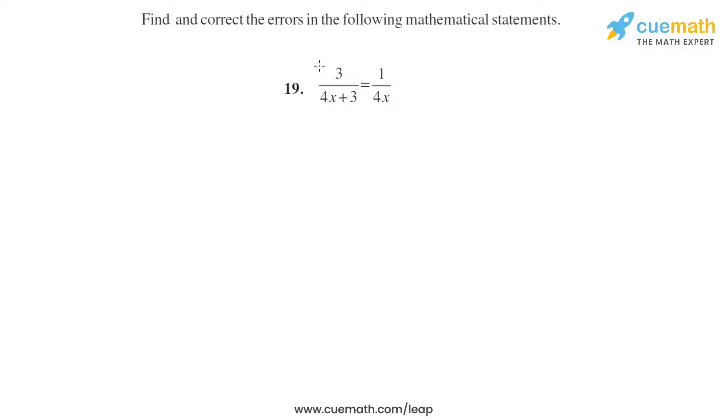19th question, again we have to find and correct the error. It is given 3 by 4x plus 3 equals 1 by 4x. Let's see if it is correct or not. 3 by 4x plus 3, only one term is there in the numerator. It means we cannot distribute the denominator and there is nothing common which we can cancel out.